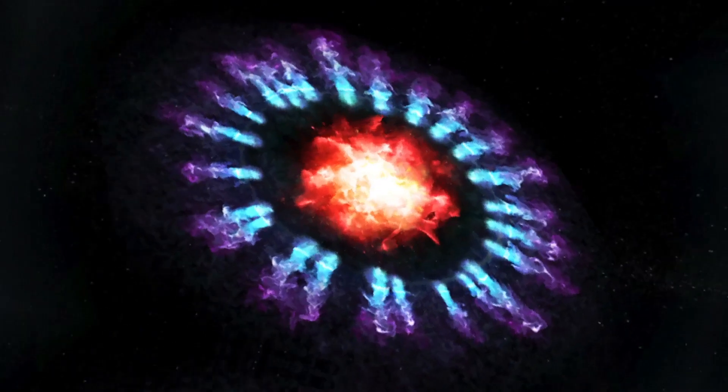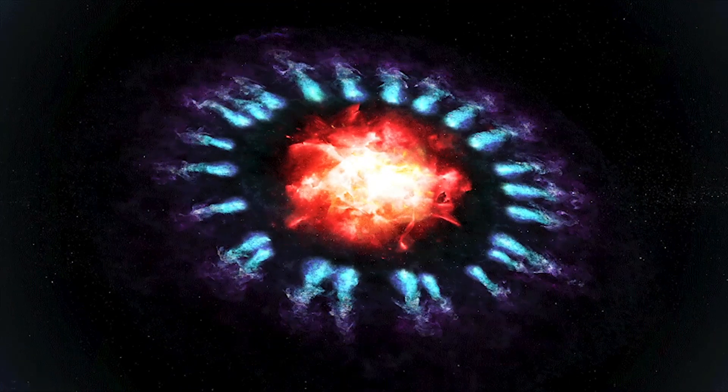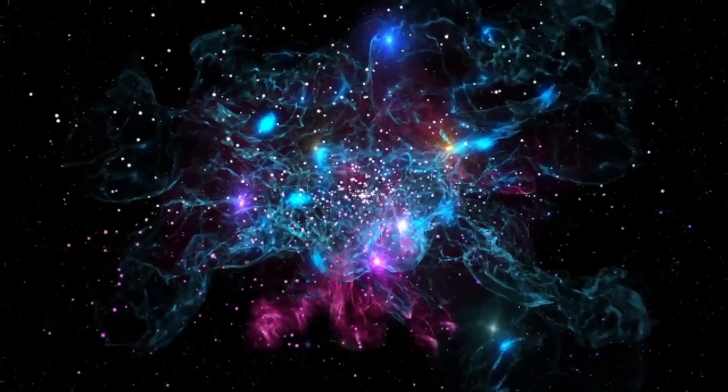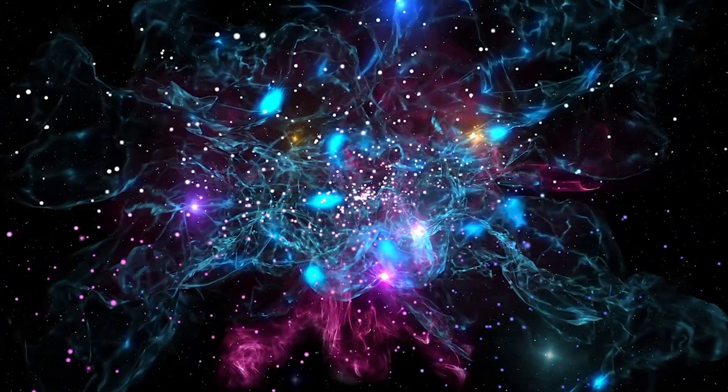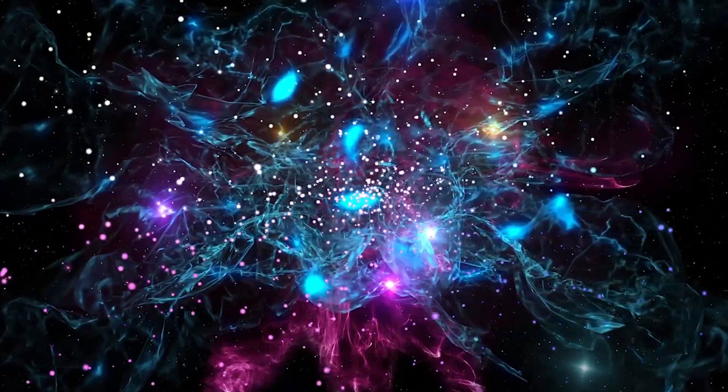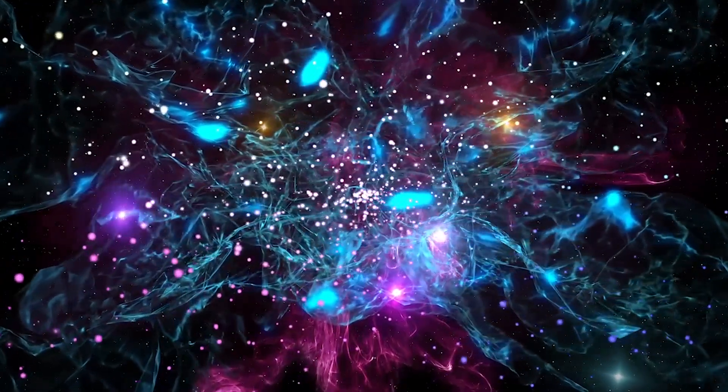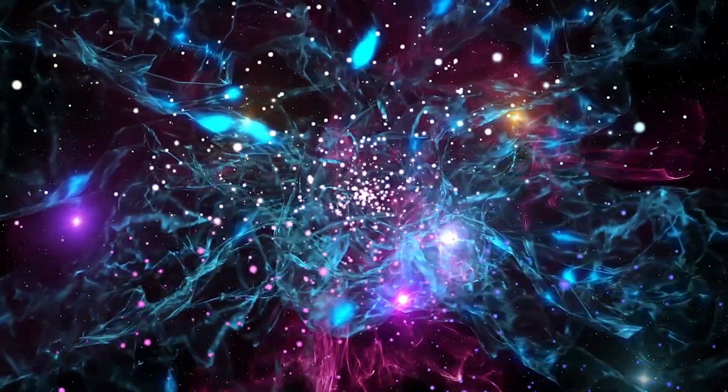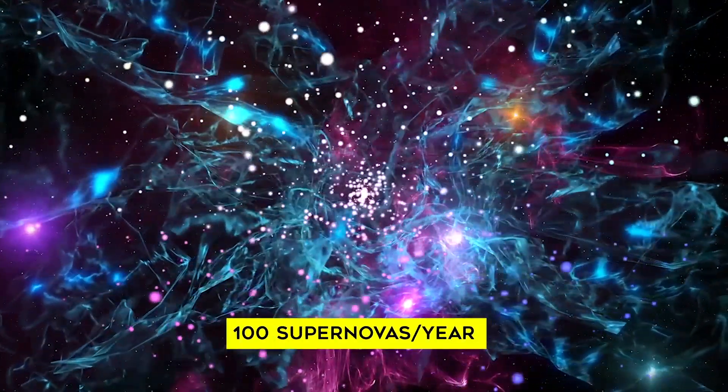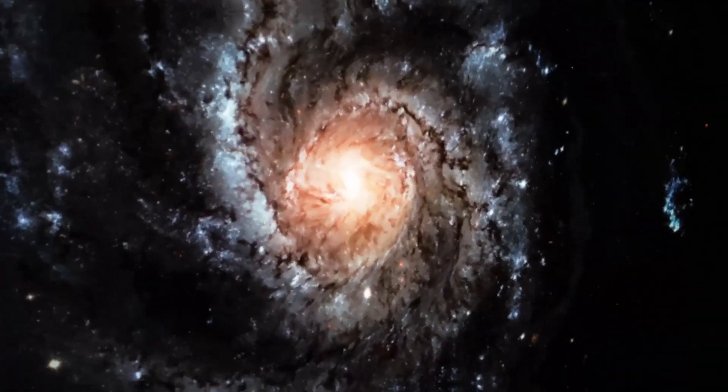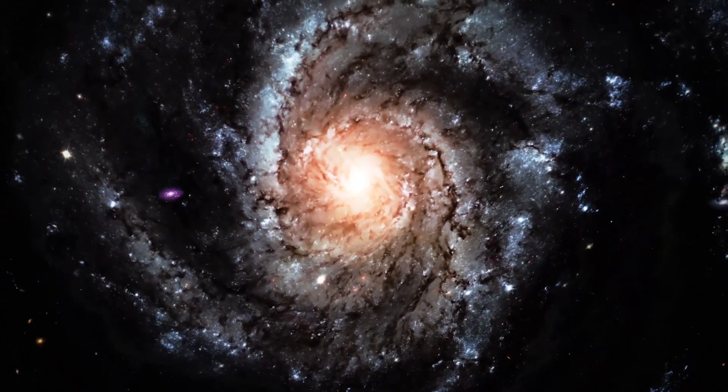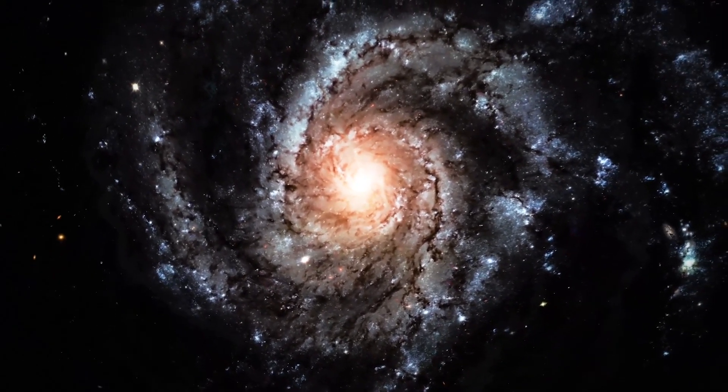Supernovas are not very common. Astronomers believe that about two or three supernovas occur each century in galaxies like our own Milky Way. Because the universe contains so many galaxies, astronomers observe a few hundred supernovas per year outside our galaxy. Space dust blocks our view of most of the supernovas within the Milky Way.